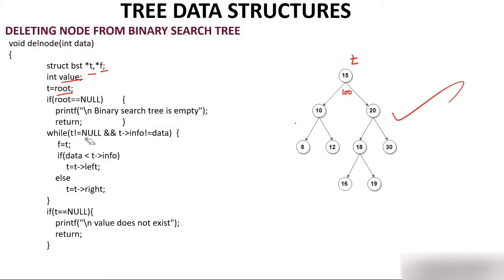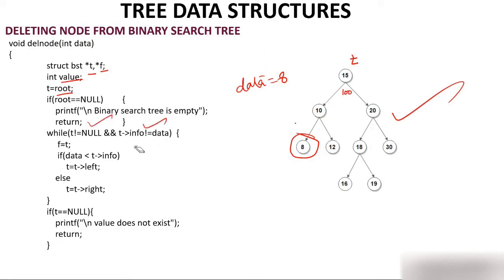I check: t is not null — yes. And t->info is not equal to data — suppose I want to delete 8, so data is 8 and t->info is 15, which is not equal to 8. So f equals t (f also points to the same position). Is data less than t->info? 8 is less than 15, yes. So t becomes t->left. T came to node 10.